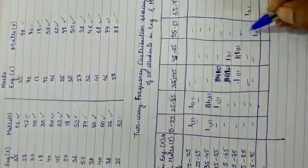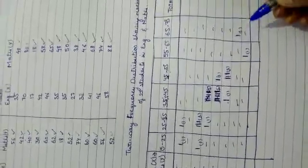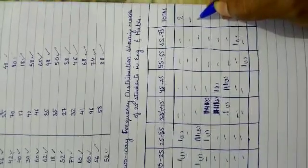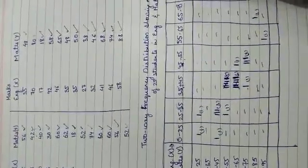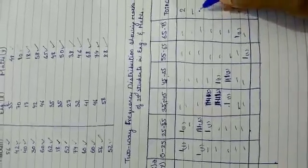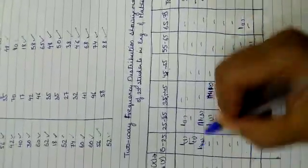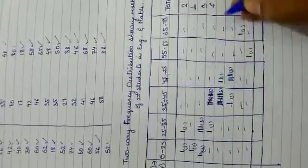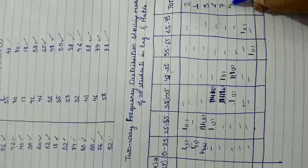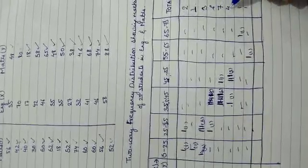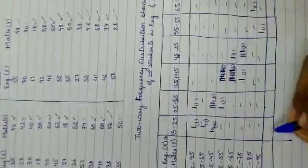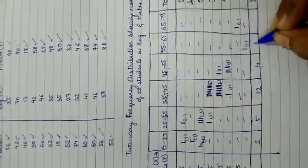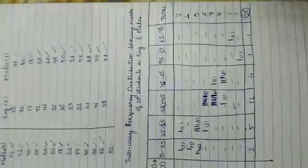Now we have to add the frequencies horizontally and vertically. Adding horizontally: 1, 3, 6, 7, 4, 1 — and the row totals. Adding vertically: 2, 4, 5, 12, 4, 1, 1, 1. The grand total comes to 25, confirming the table is complete and the question is solved.